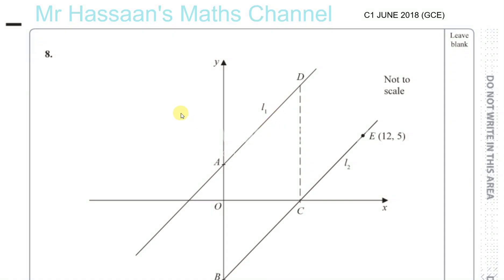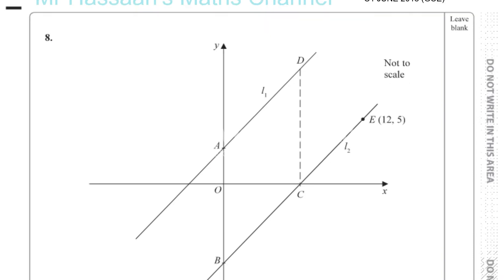Here we have question number 8 from the legacy C1 June 2018 GCE paper, which also happens to be question number 5 from my practice paper C for the P1 students — students who are taking Pure Mathematics 1, international A level. Here we have a diagram given with some graphs, straight lines drawn, line 1 and line 2.